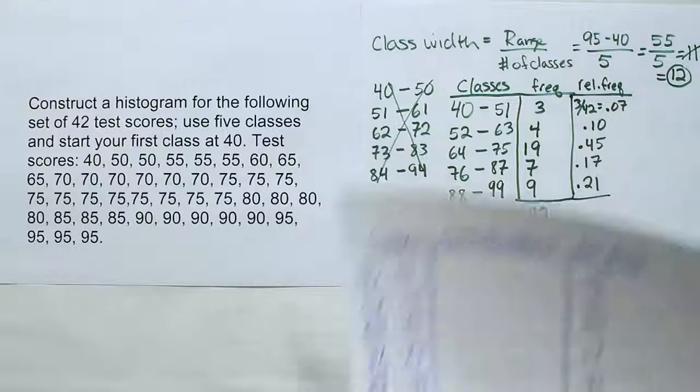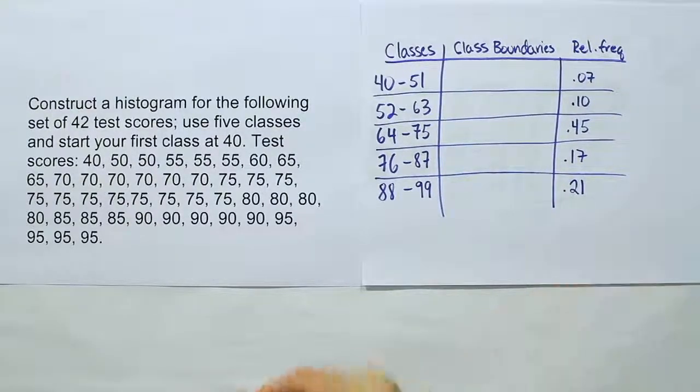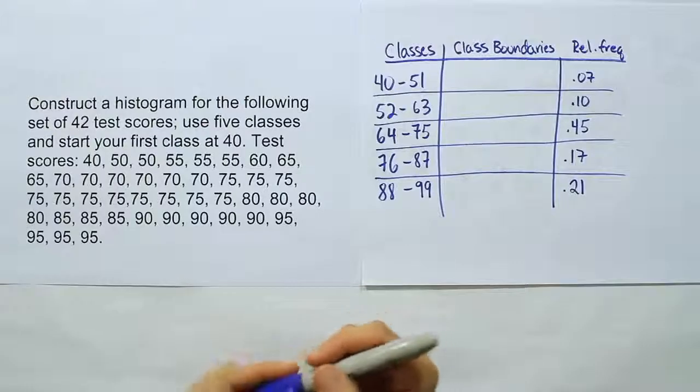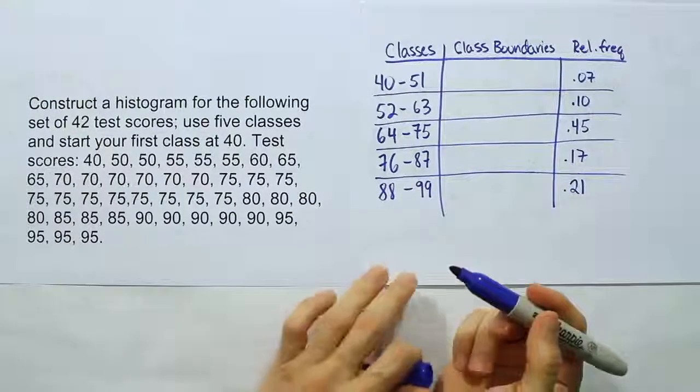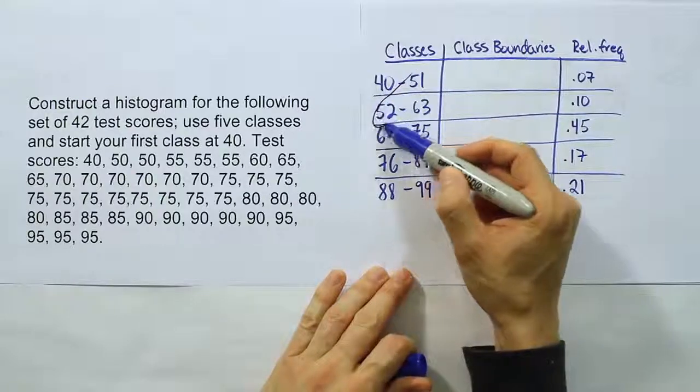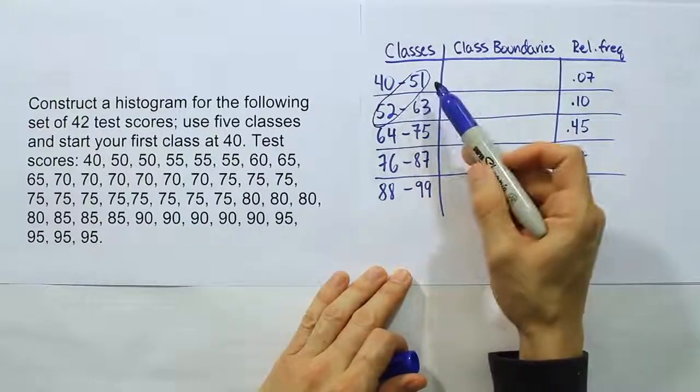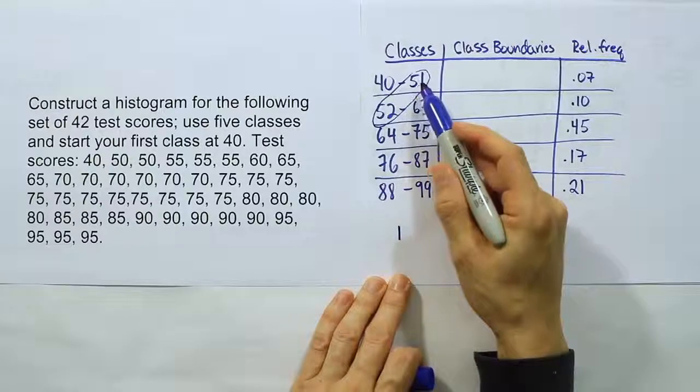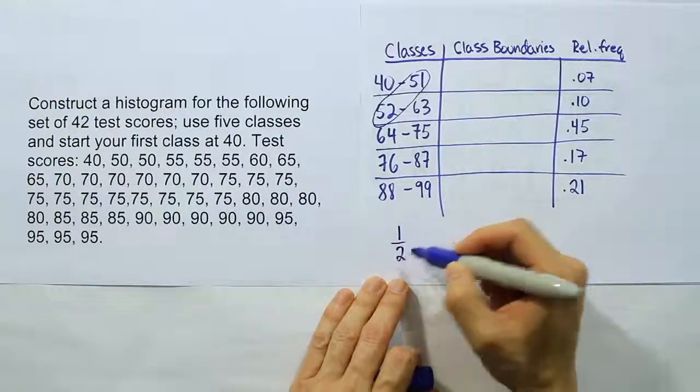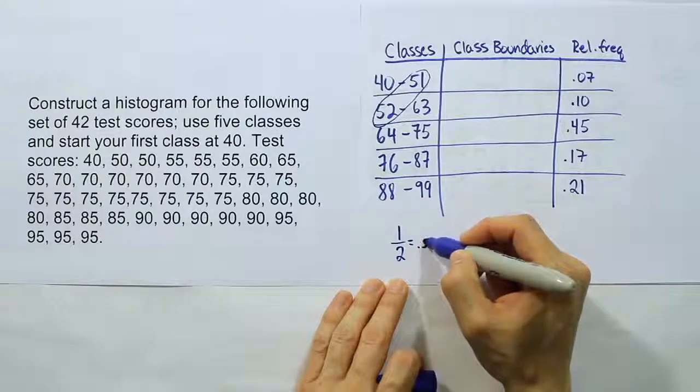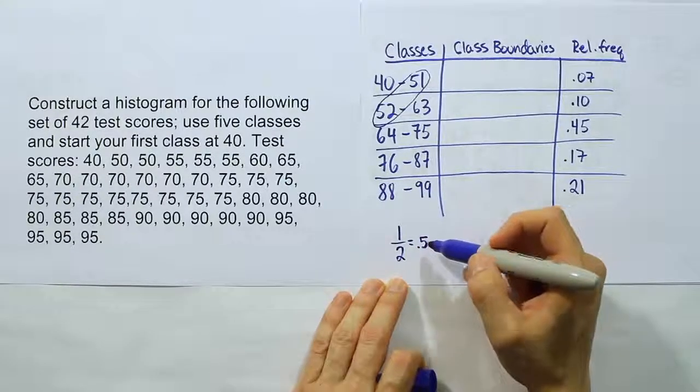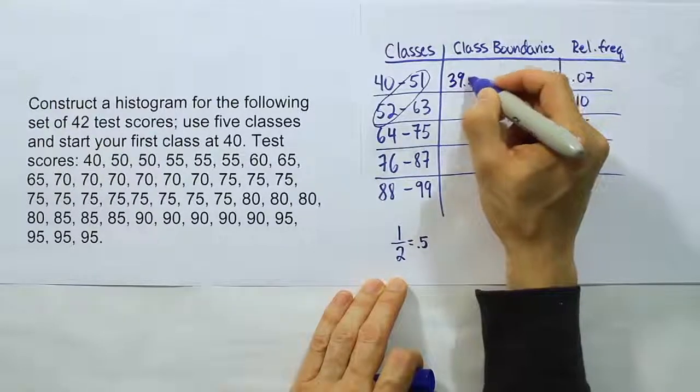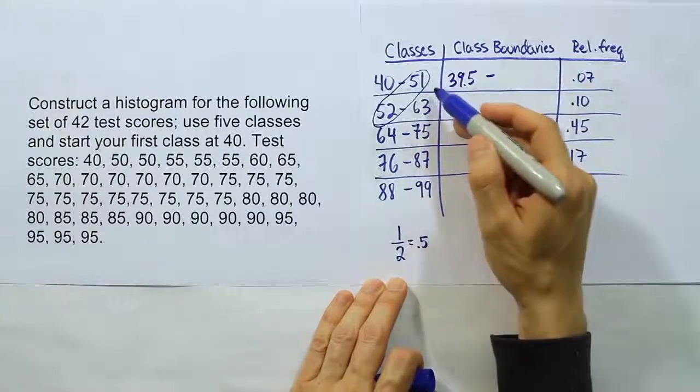Here is the same table we were just creating, but I've separated the classes and relative frequencies, and in between I've put the class boundaries. What we're going to do is figure out what those class boundaries are. If you remember the technique, we look at these two numbers here on that first diagonal, and we're going to ask ourselves, what's the difference between these two numbers? When I subtract them, I get the number 1. 52 minus 51 is 1. And then I take half of that. In this case, that will work out to be .5. Once I have that value, .5, I'm going to subtract it from this number, so I'll do 40 minus .5, which is going to give me 39.5.